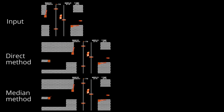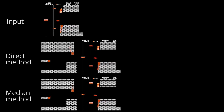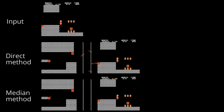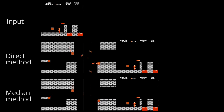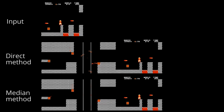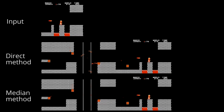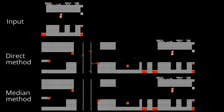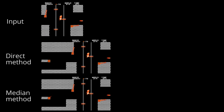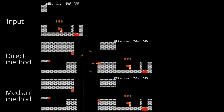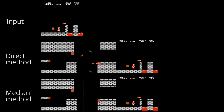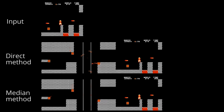As the frame moves, new pixels are added to the panoramic texture. The direct method adds pixels from the most recent frame, while the median method accumulates pixels over several frames. While both methods have advantages and disadvantages, we use the direct method for our examples.